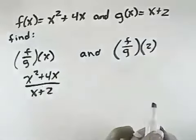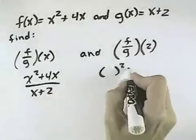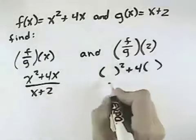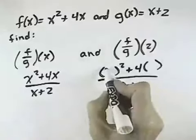And so now we want to evaluate this at 2, so that means we leave everything in the functions except the x's. We're taking the x's out because we're going to replace those x's with 2's.